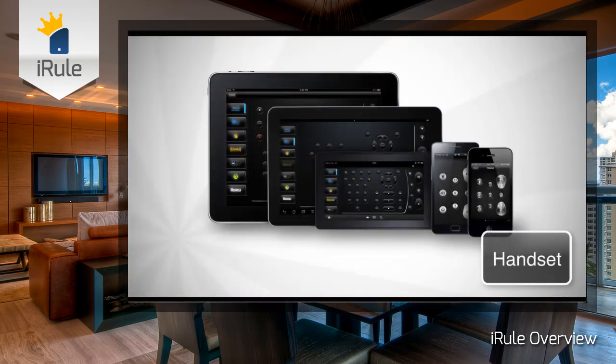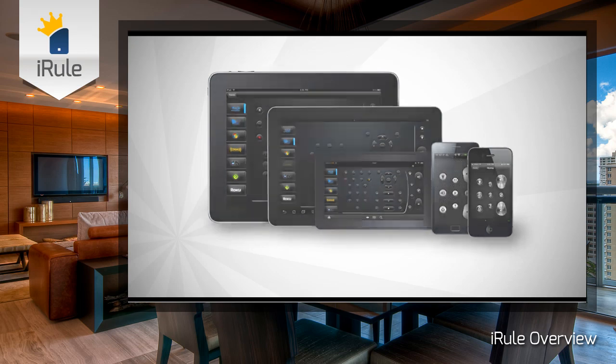A handset refers to any smart device that will be running the iRule app. In Builder, a handset is referred to as a unique graphic interface or resolution that corresponds with a smart device. For instance, an iPhone handset is a unique graphic interface when compared to an iPad or Android device. For example, if each member of the Smith family was using the same graphic layout for their iPhones, they would only be using one Builder handset. However, if they each wanted their own graphic layout, they would each require their own iPhone handset in Builder to sync with their individual phones.